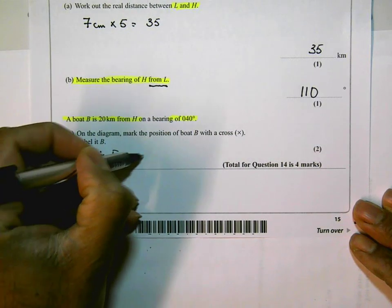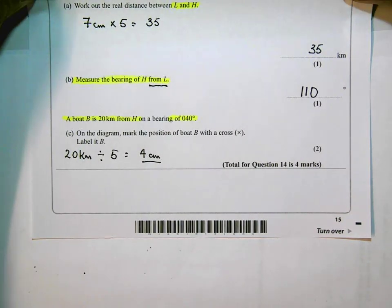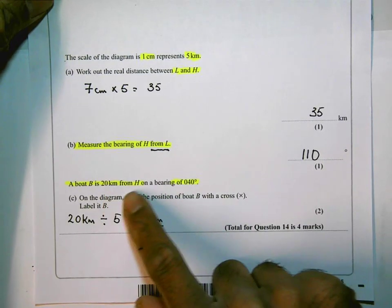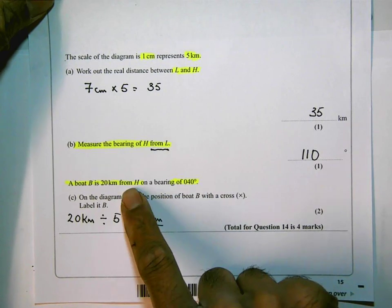So what I need to do is to go up to it, and the boat is on a bearing of zero four zero, or 40 degrees from H. Because it's from H, on the diagram I'm going to put my protractor on H.